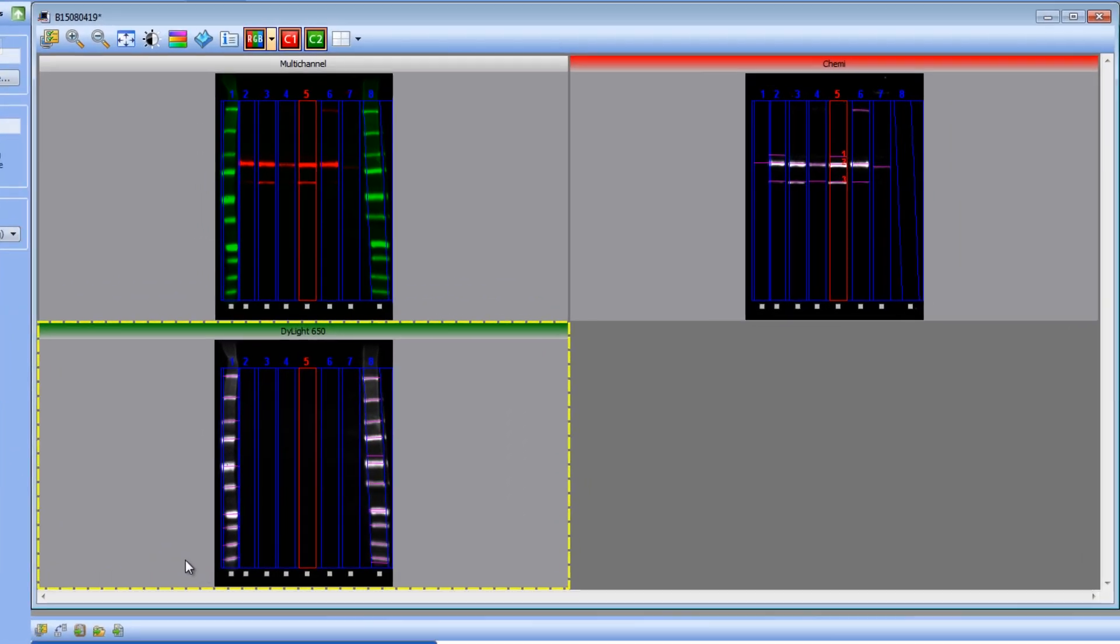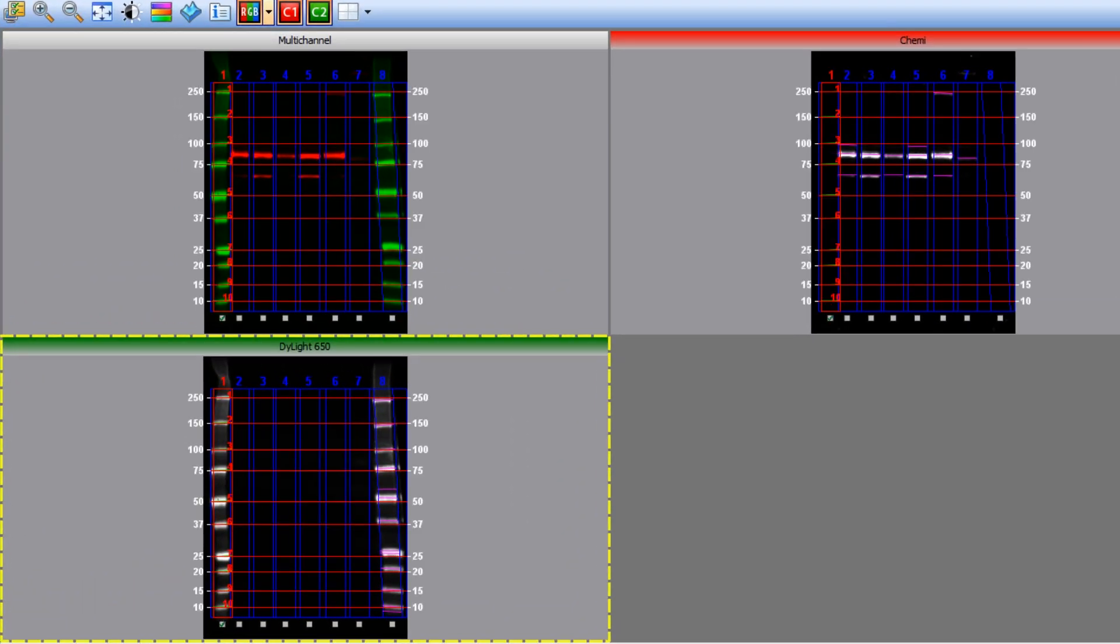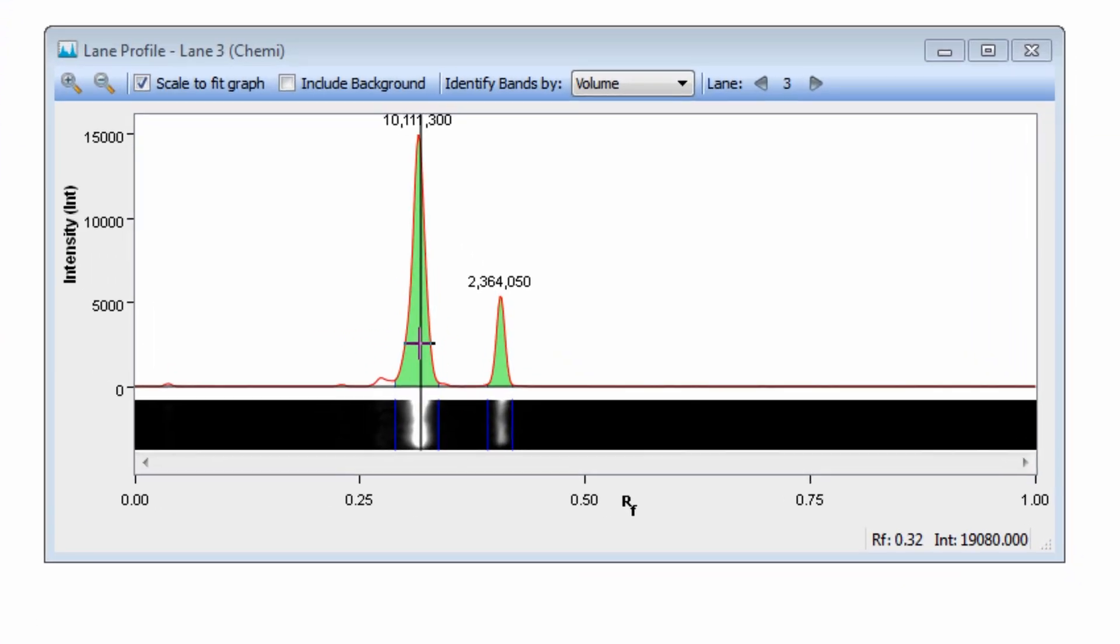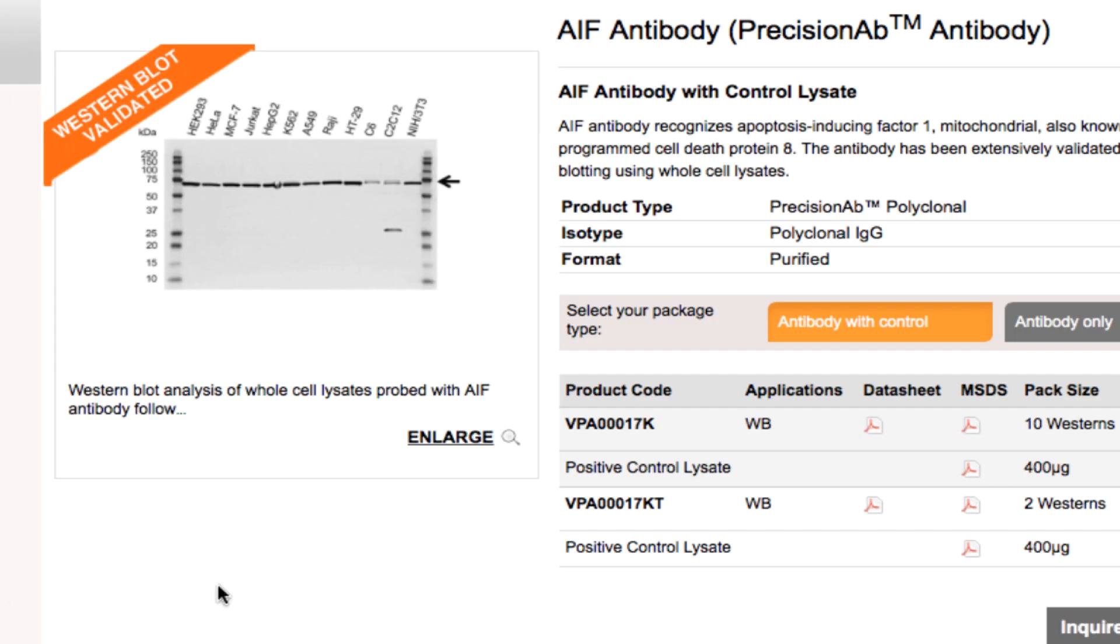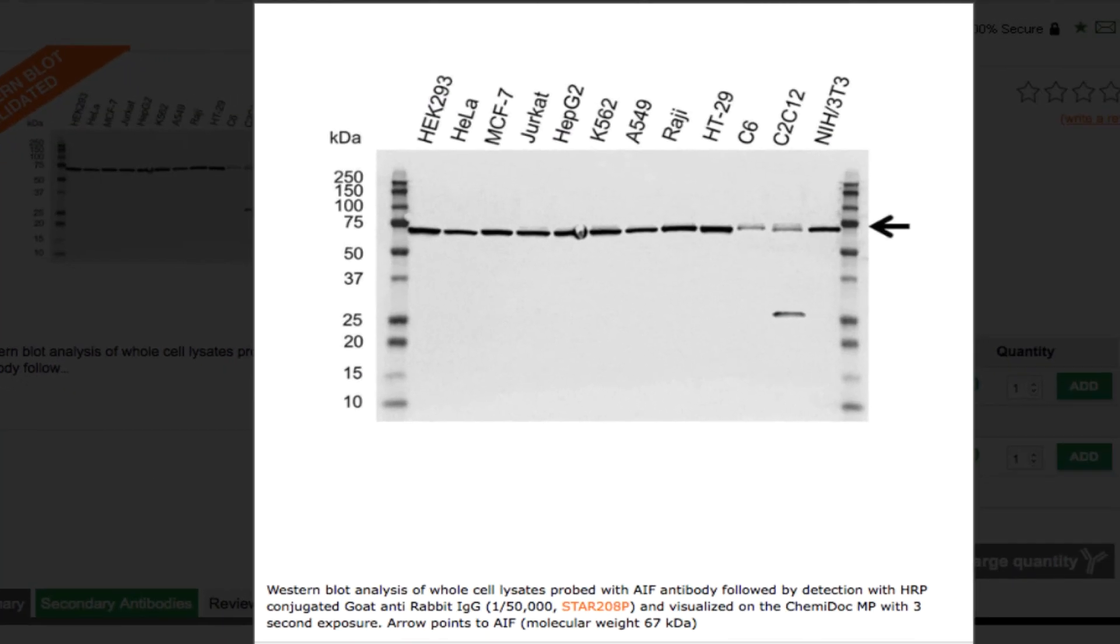If there's some nonspecific bands in a particular lysate or we don't see expression in another lysate, we're not going to be removing the data. So any researcher that will go to our website will see the exact data that we generated that allowed us to determine whether the antibody became a Precision Antibody.